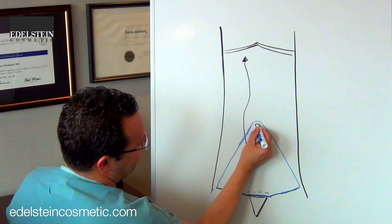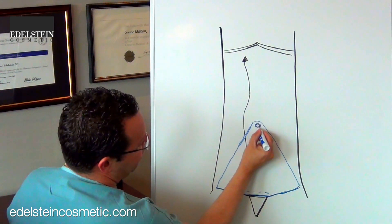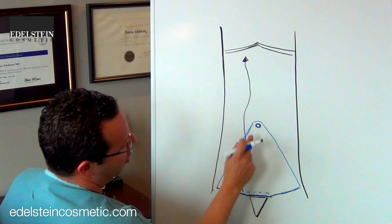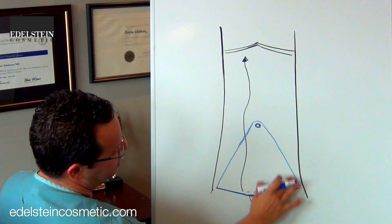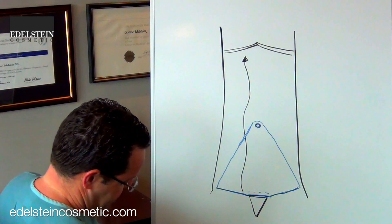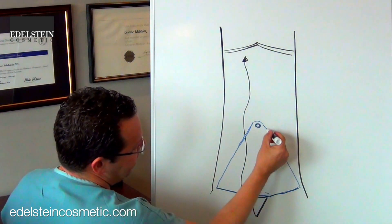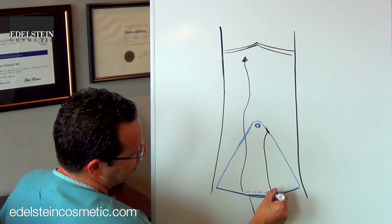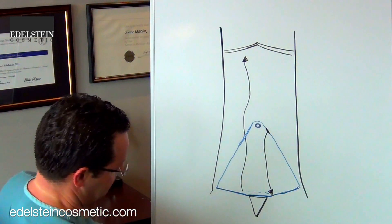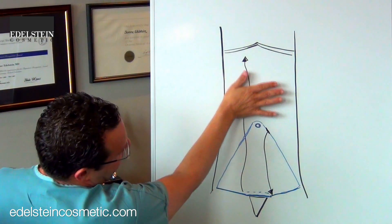We don't want to throw away the belly button, so what we do is I will make an incision around your belly button, leave it there, and take away the rest of this skin and fat.